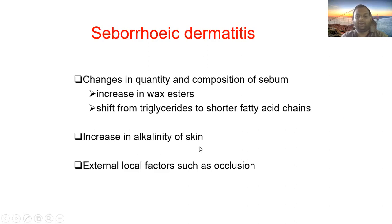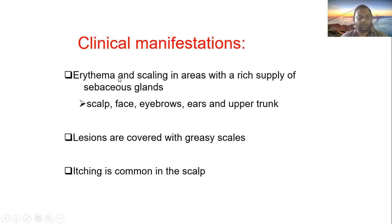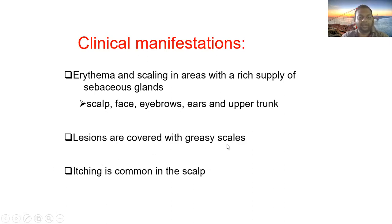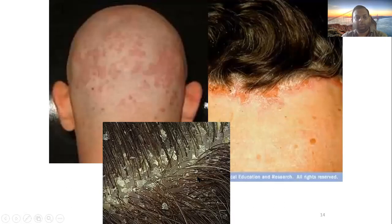Increased alkalinity of the skin and external local factors such as occlusion contribute to seborrheic dermatitis. Clinically, there is erythema and scaling in areas with a rich supply of sebaceous glands — the scalp, face, eyebrows, ears, and upper trunk are common sites. Lesions are covered with greasy scales, and itching is common on the scalp.